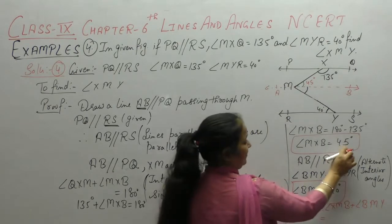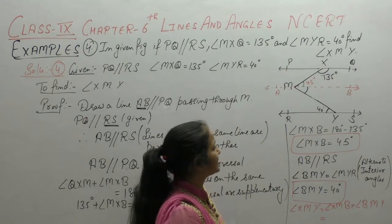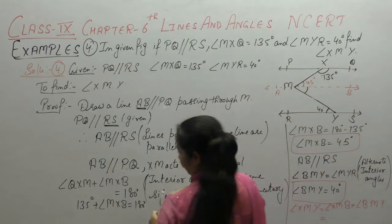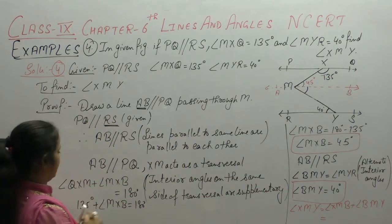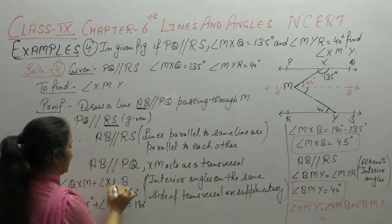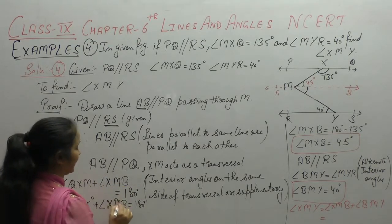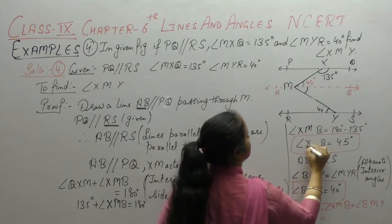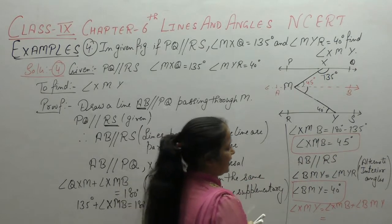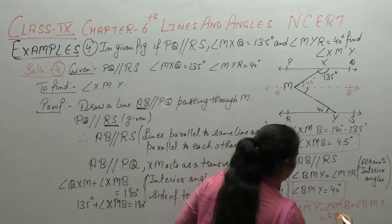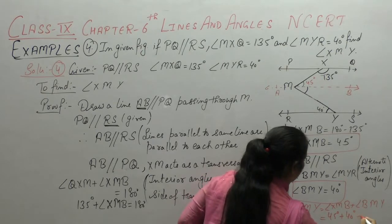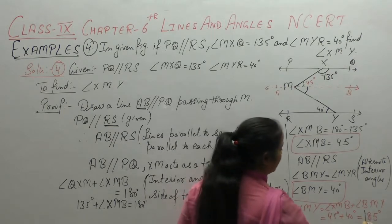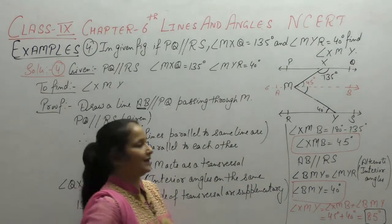Now, angle XMY equals angle XMB plus angle BMY. Angle XMB is 45° and angle BMY is 40°. So angle XMY = 45 + 40 = 85 degrees.